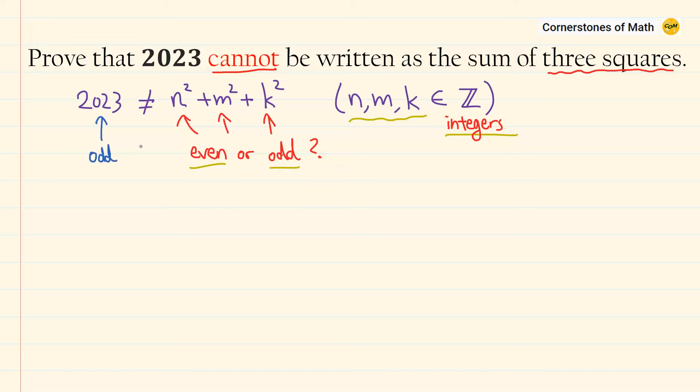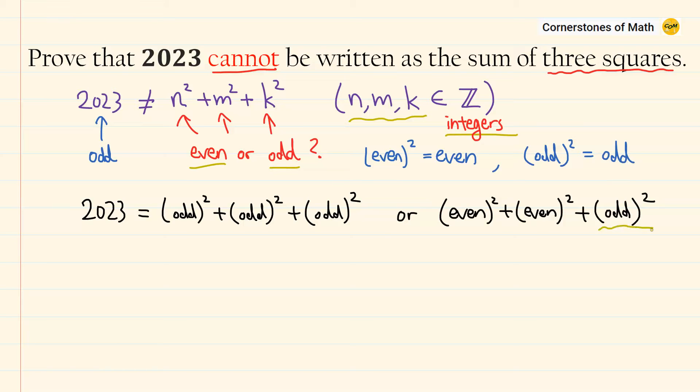Well, we know that 2023 is odd, and even number squared is still even, and odd number squared is still odd. So the only possible cases are either all three of them are odd, or only one of them is odd.